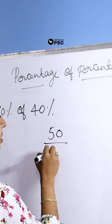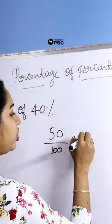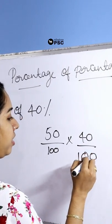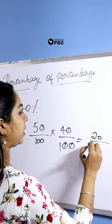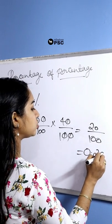50% of 40% is 50 by 100 into 40 by 100. Cancel the zeros. 2 by 100 is equal to 0.20.